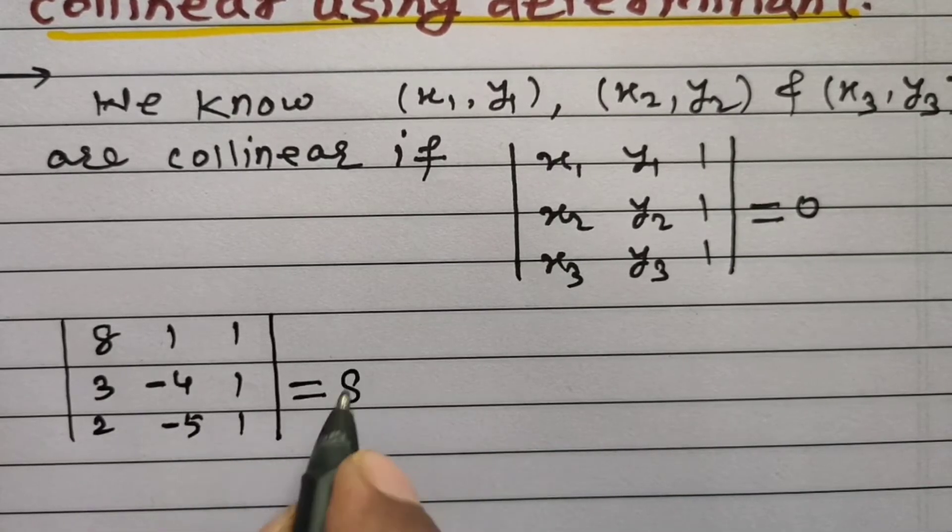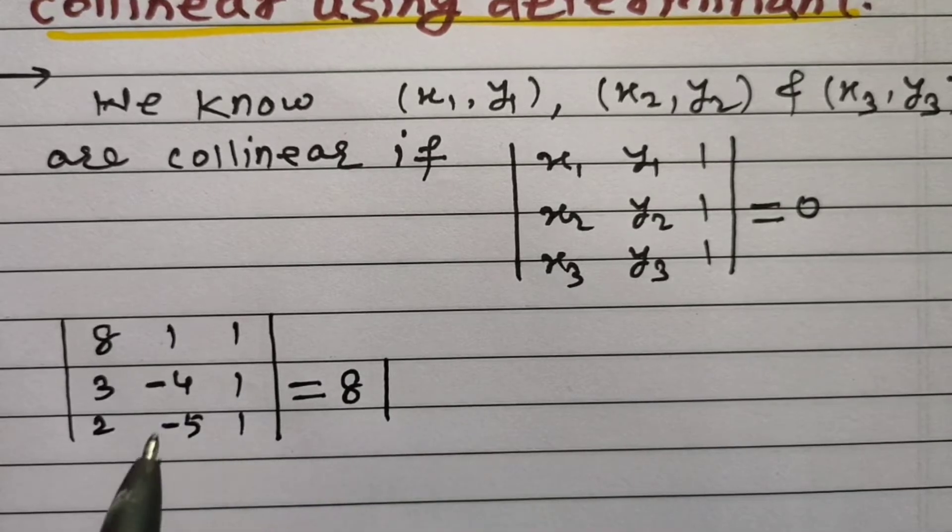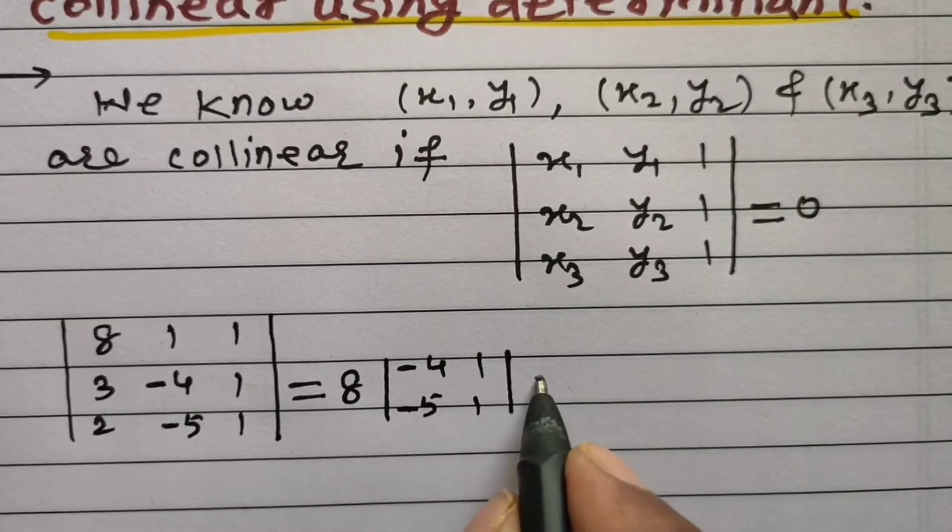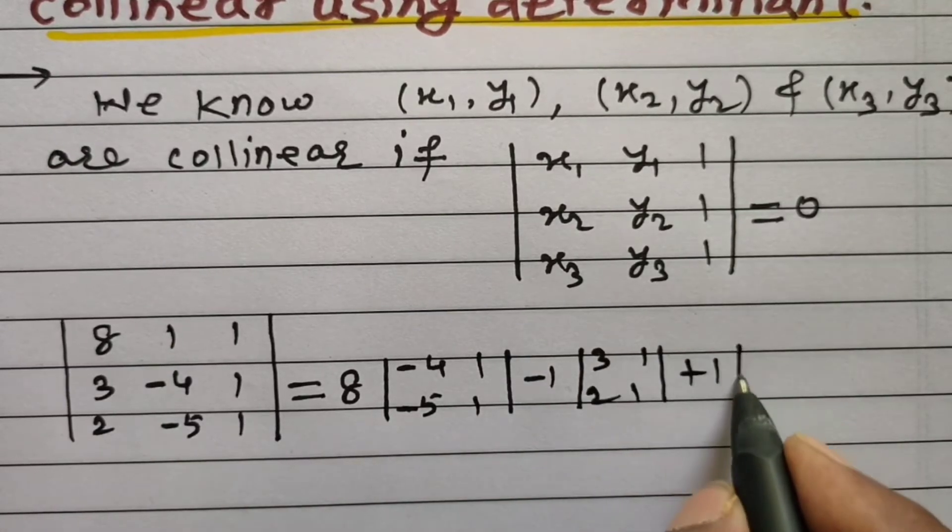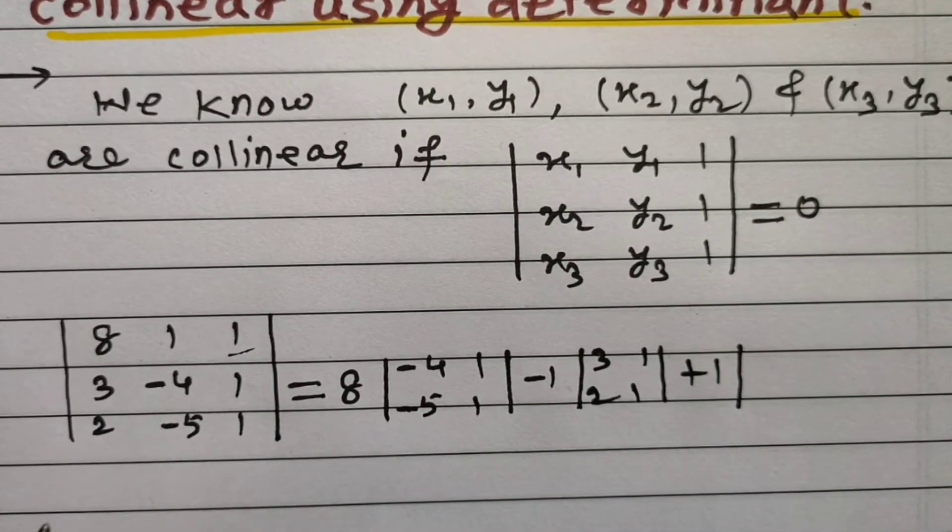This is equal to 8 into minor of 8, minus 1 into minor of this 1, plus 1 into minor of this element.